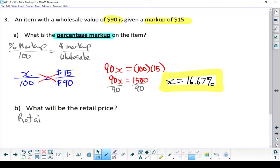What will the customer pay? Retail equals wholesale plus markup. Wholesale price was $90, that's what the store paid. They marked it up $15. Our retail price is $105.